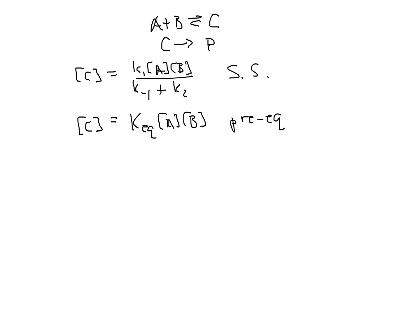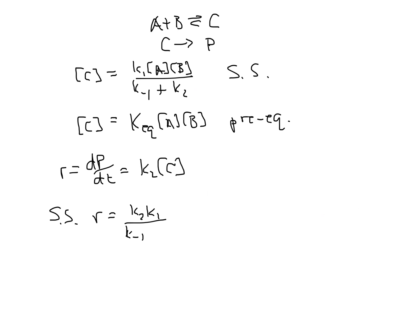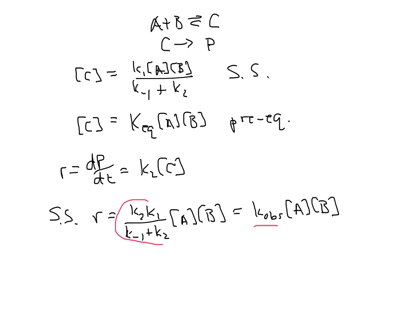The overall rate of reaction is how fast the products are made, and that is equal to K2 times C. So, in the steady-state approximation, my rate is equal to K2 times K1 divided by K minus 1 plus K2, times the concentration of A times the concentration of B, or K observed times the concentration of A times the concentration of B, where K observed is this combination of rate constants and is constant and does not depend on any concentrations.